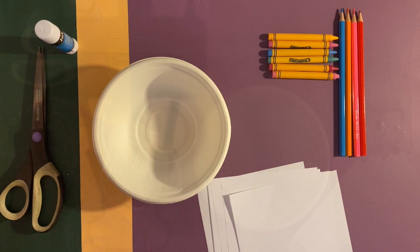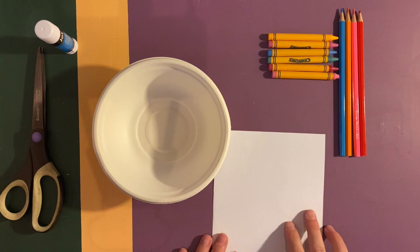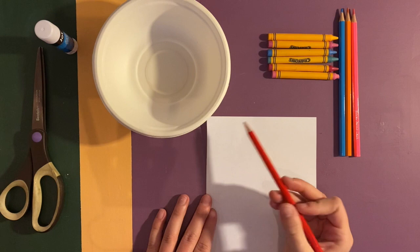First, let's color our bowl. We can use colored sheets of paper to glue on or you can use your coloring utensils to draw right on the bowl.